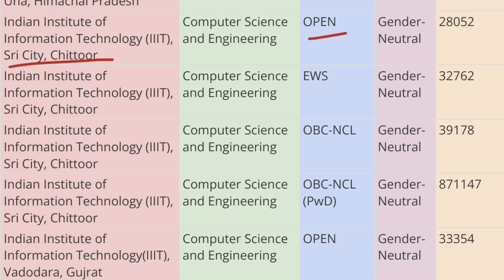Moving ahead, we have IIIT Sri City, Chittoor. For Open category the cutoff rank is 28,052 for Computer Science, for EWS category the cutoff rank is 32,762, for OBC-CL category the cutoff rank is 39,178, and for OBC-CL PWD the cutoff rank is 8,71,147.